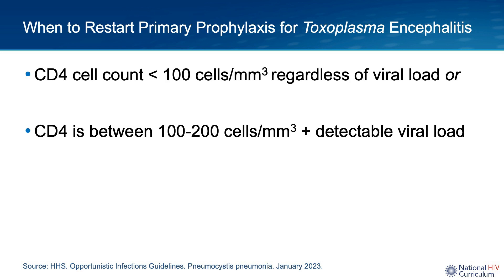This slide covers when to restart primary prophylaxis for toxoplasma encephalitis if it was previously discontinued. You would want to resume primary prophylaxis in individuals whose CD4 count drops to less than 100, regardless of viral load, or in individuals whose CD4 count is between 100 and 200 if they have a detectable HIV viral load.